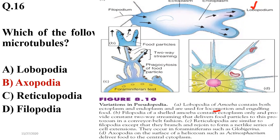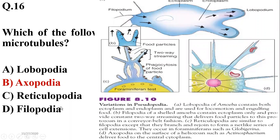Reticulopodia are similar to filopodia except they branch and rejoin to form a net-like structure. Axopodia are found on the surface of Heliozoa, large marine amoeba, and are responsible for delivering food to the central cytoplasm. So the correct option is B — axopodia.